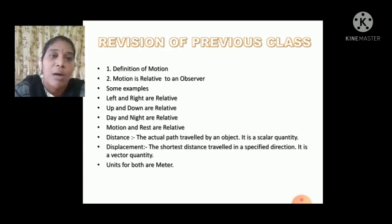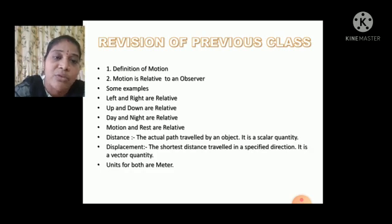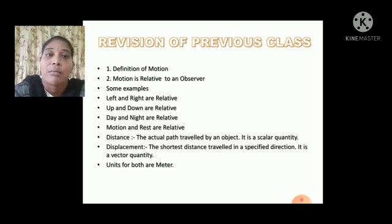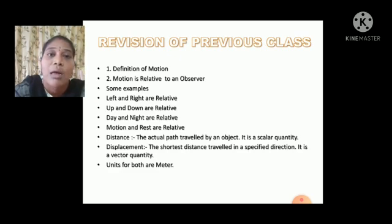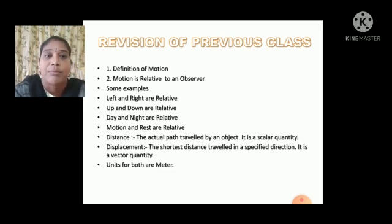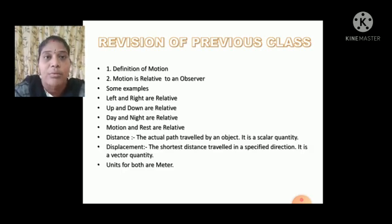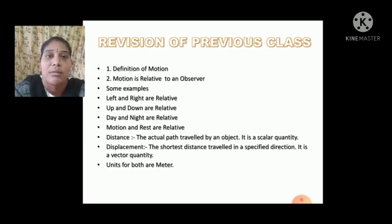Next, we discussed about distance and displacement, also with pictures. What is distance? It is the actual path travelled by an object. It is a scalar quantity, meaning only magnitude value is given. Next is displacement — the shortest distance travelled in a specified direction. Here we are showing the direction also, so it is a vector quantity, meaning it shows magnitude as well as direction.